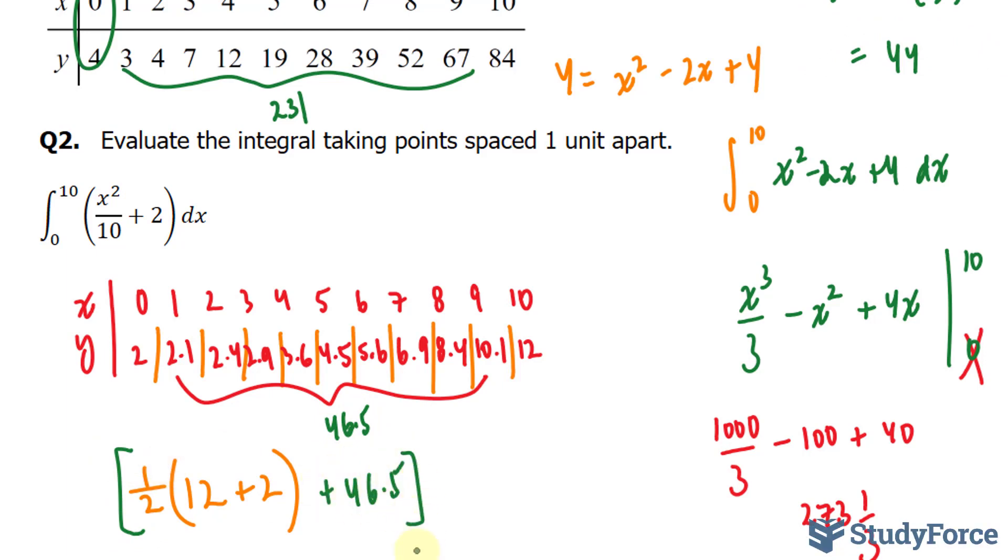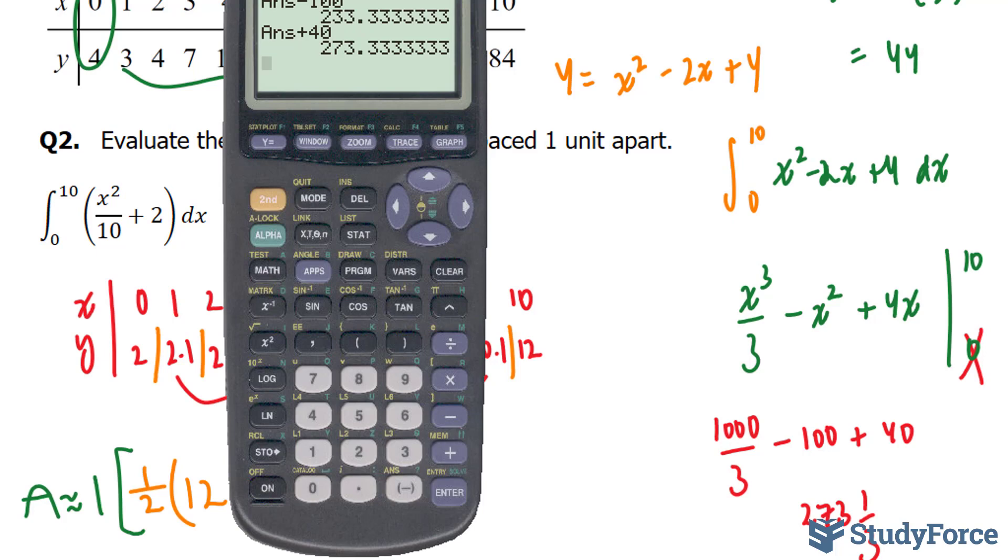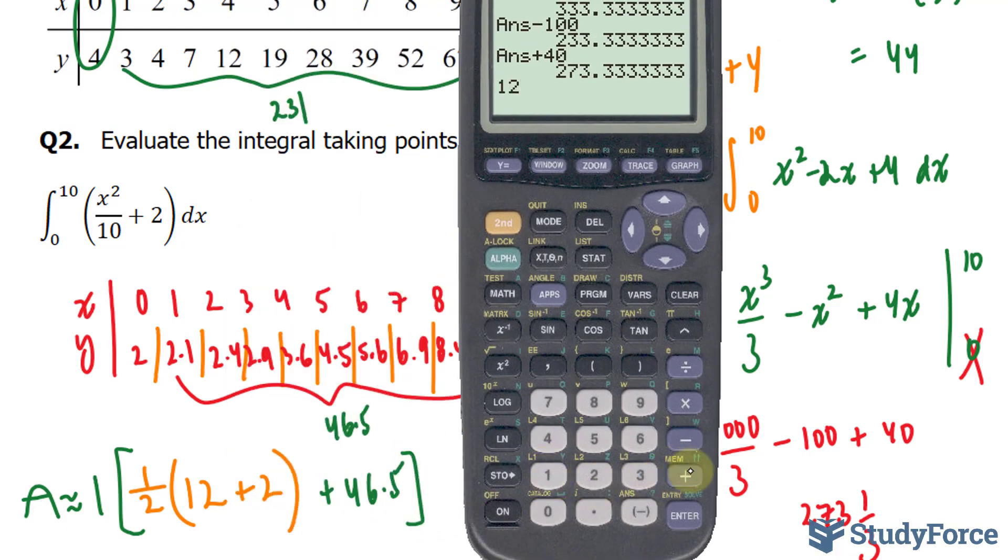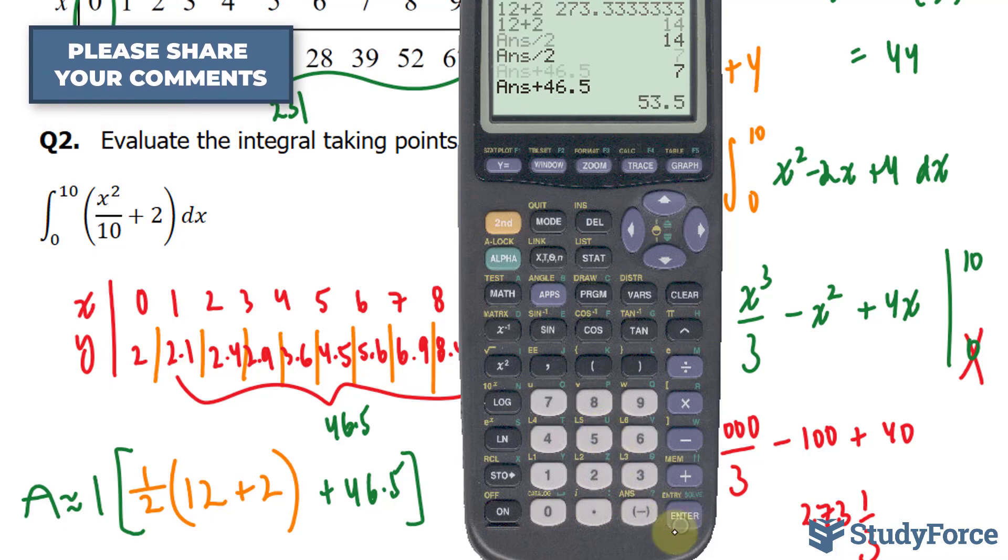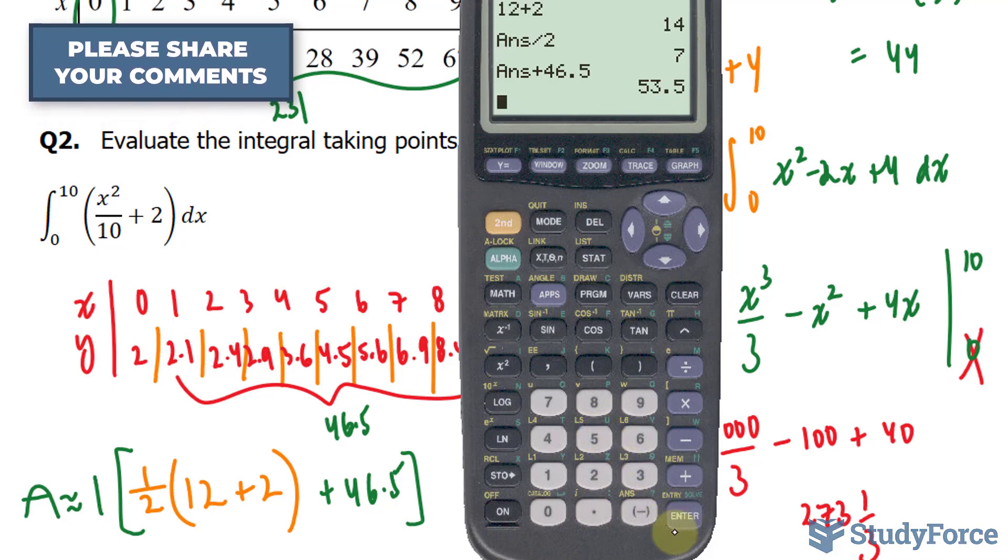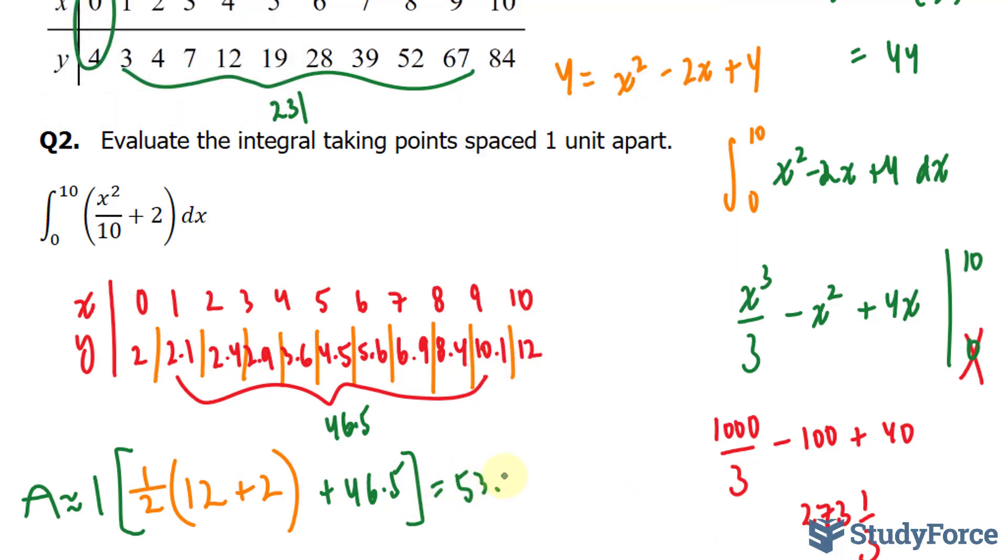And to find my h, I will subtract 1 with 0. Which is 1. And the area will be defined by this expression. So let's go ahead and use our calculator for this. We have 12.2 divided by 2. Plus 46.5. And that gives us 53.5.